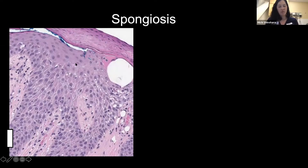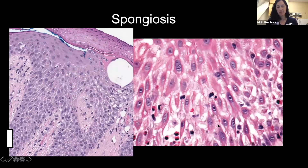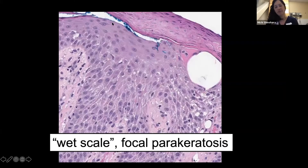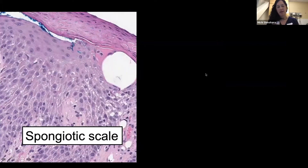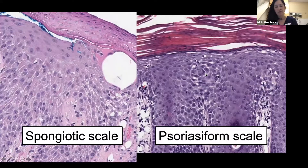Spongiosis refers to these spaces between the keratinocytes due to edema. Here's a much more up-close look. What we're seeing are the bridges between the keratinocytes — they're actually being stretched out by edema. Wet scale is where you have just clusters of serum in the stratum corneum. In psoriasiform dermatitis, by contrast, there's no serum — dry scale.